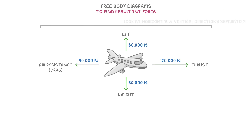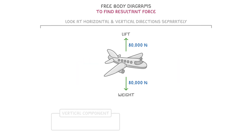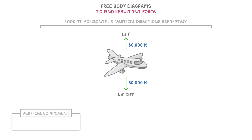It's normally easiest to do this by looking at the horizontal and vertical directions separately, and calculating the overall size and direction of the resultant force in each case. For example, the vertical component of this free body diagram involves a force of 80,000 newtons up and 80,000 newtons down. So when we subtract one from the other, we're left with 0 newtons overall for the vertical component.